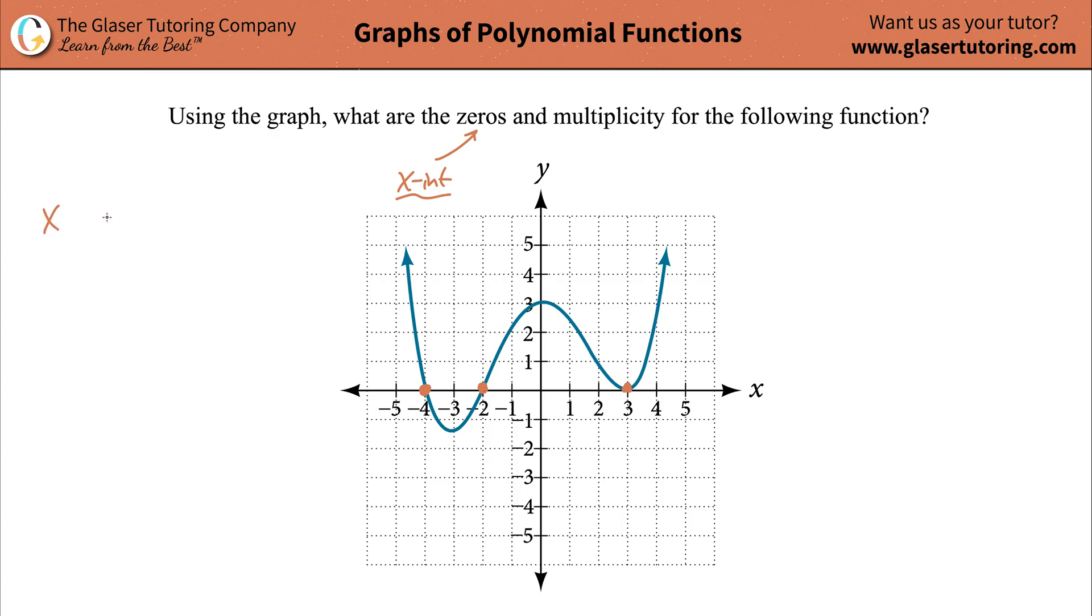And we'll write them down. So we'll have x being equal to negative 4 was one of them, x being equal to negative 2 was another, and x being equal to 3 was the last one. Now those are going to be the zeros, these values right here.